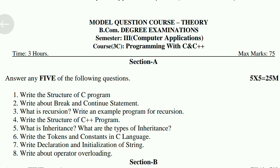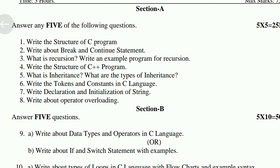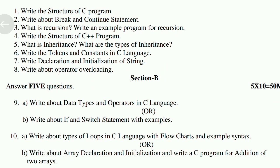Write declaration and initialization of a string. Write about operator overloading. Then question 9a: write about data types and operators in C language. 9b: write about if and switch statement with example. Question 10a: write about types of loops in C language with flowchart and example syntax. 10b: write about array declaration and initialization and write a C program for addition of two arrays.